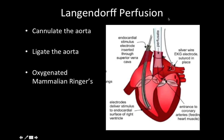The fluid coming down was oxygenated mammalian ringer solution. Mammalian ringer solution is similar to blood in ion concentration, osmolarity, and pH, so it is a good surrogate for blood. It can provide oxygen and nutrients to the heart tissue and keep it alive for an extended period of time.